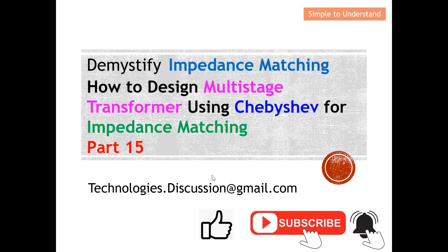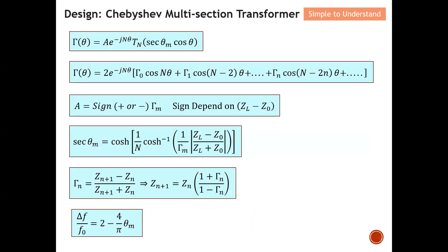Thank you for your support. These are the six formulas I introduced in the Part 14 series discussion — the essential formulas required to design a multi-section transformer using Chebyshev shield. I have explained how to utilize these formulas, and in this video I will have an example of how to use all six formulas to calculate the impedance of the multi-section quarter-wavelength transformer using the Chebyshev shield method. That will be the objective of this video.